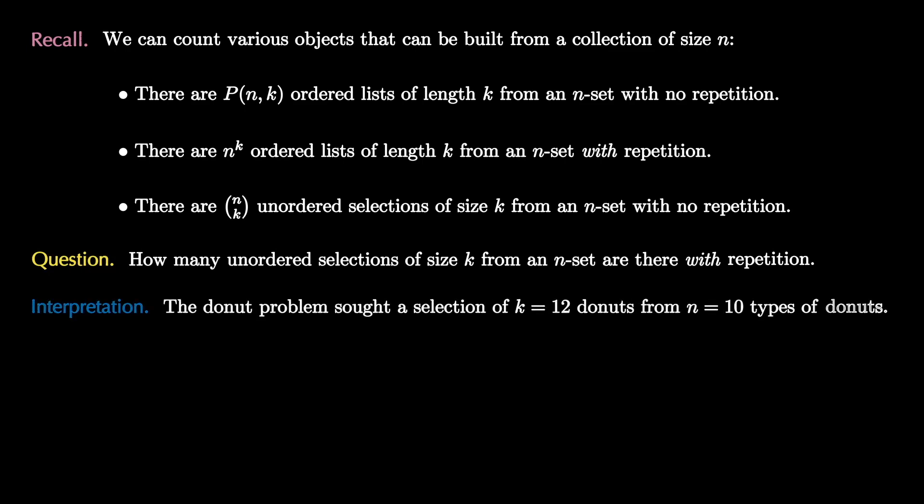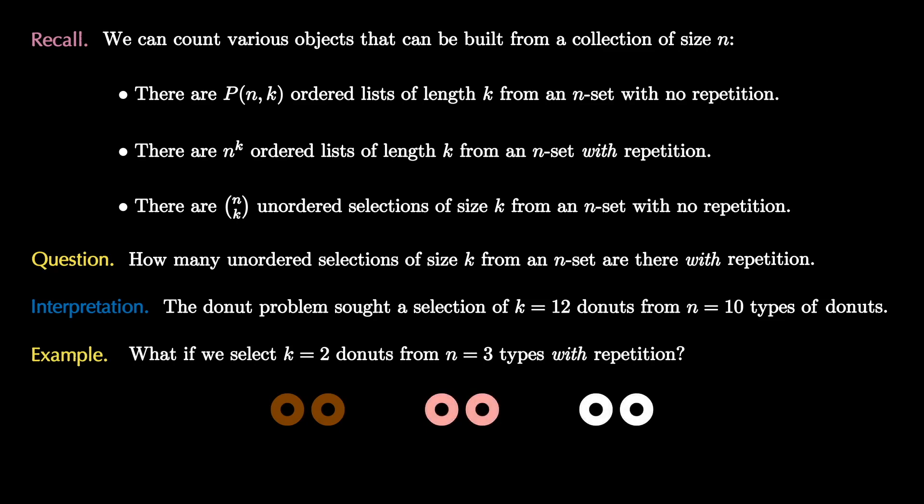So the interpretation of the original problem was that we wanted k equals 12 donuts from a collection of n equals 10 types of donuts and we wanted to allow repetition. Let's see this in action with our example of k equals two donuts from n equals three types where we do allow repetition. In this case we can have two chocolate, two strawberry, or two vanilla along with the three subsets that we had seen before. So in this case there are six unordered selections of two donuts from three types where we allow repetition.